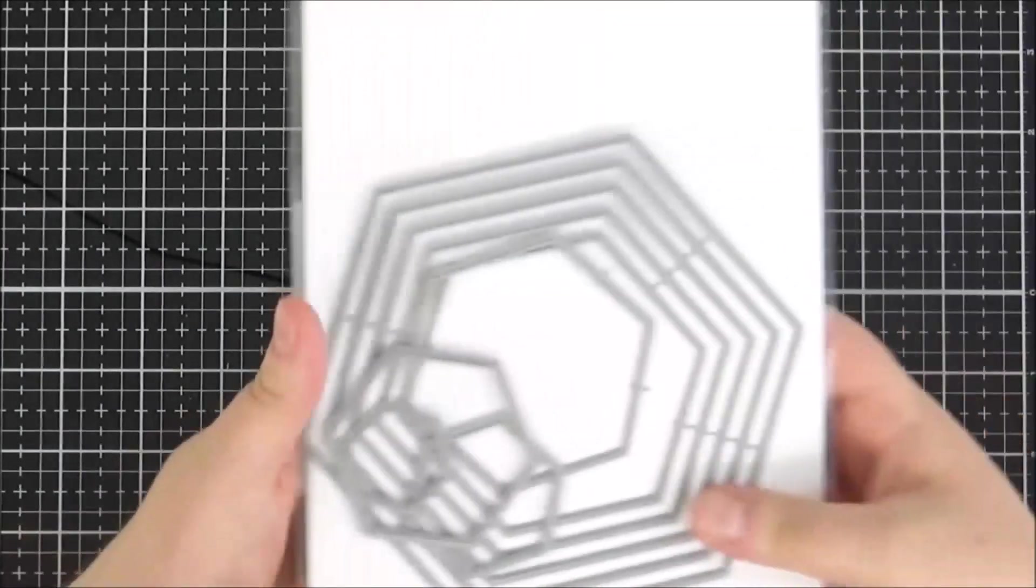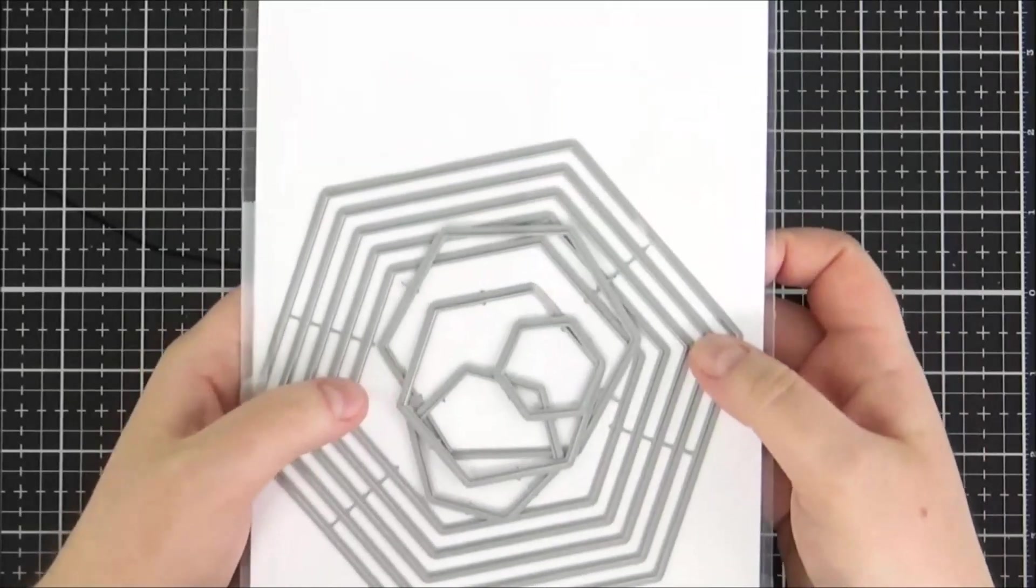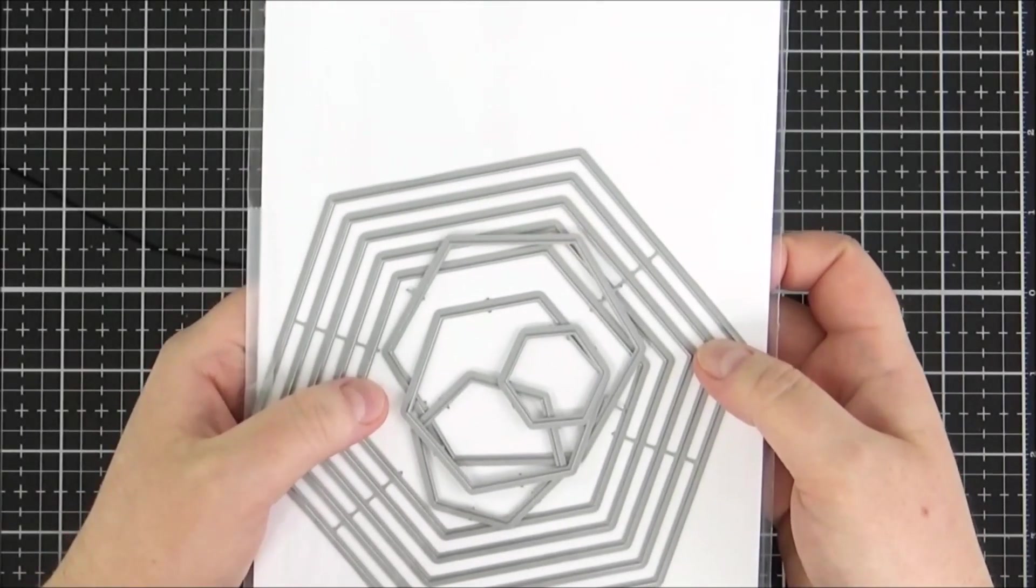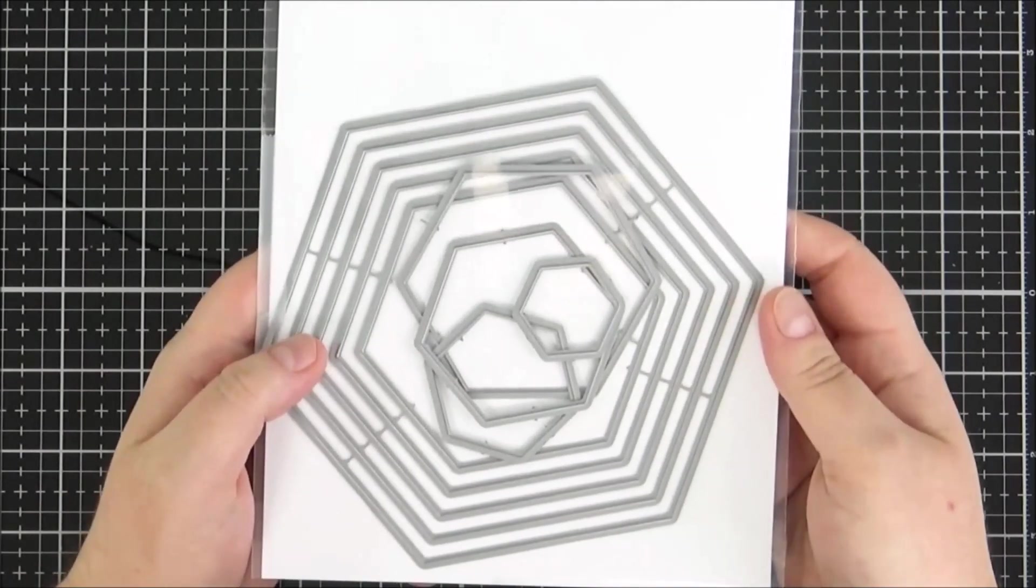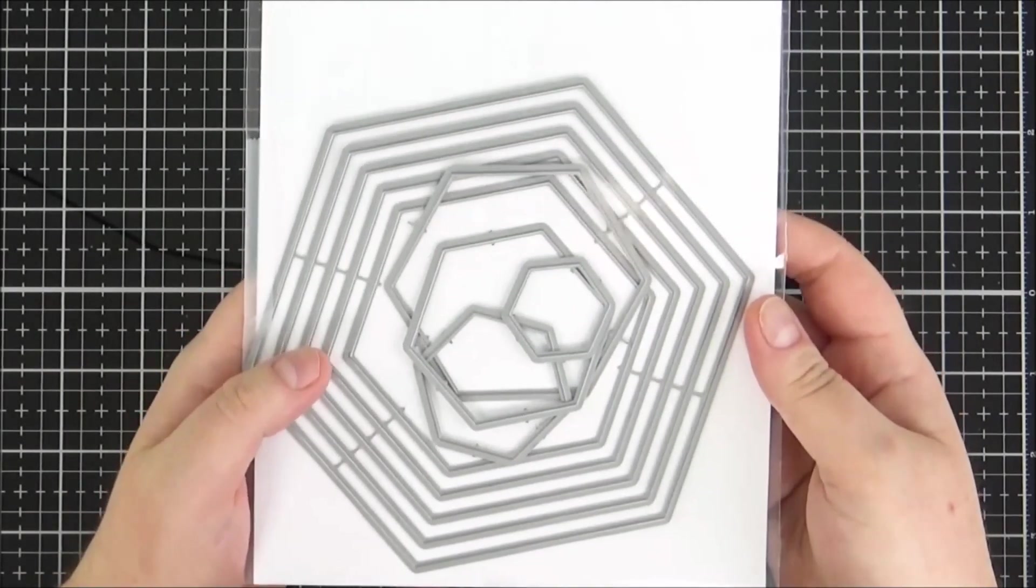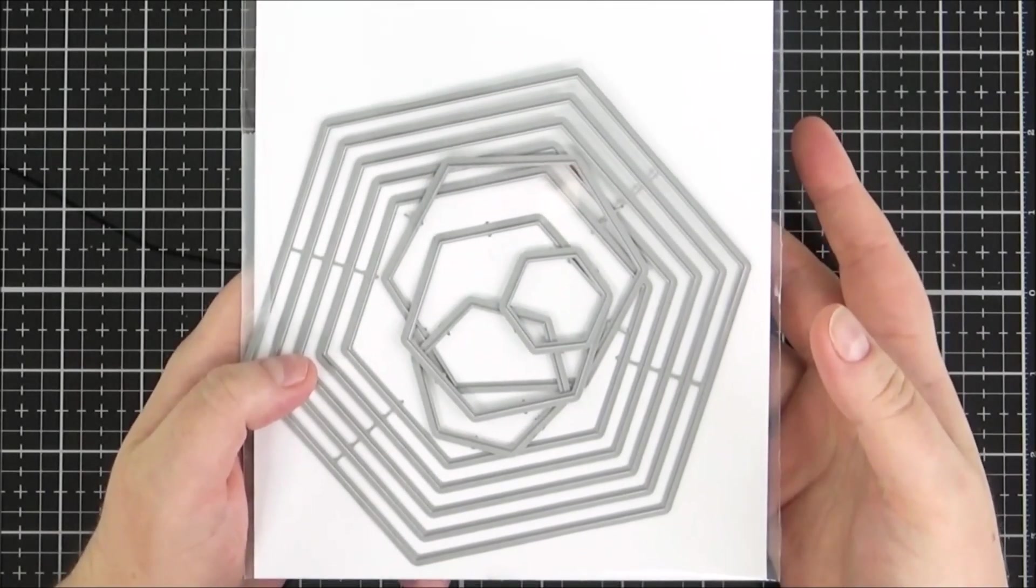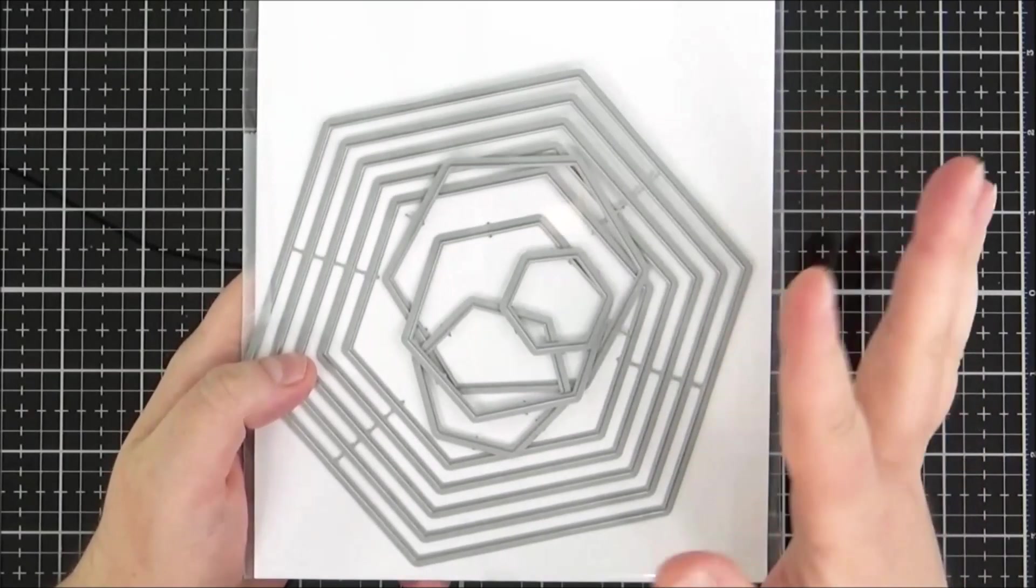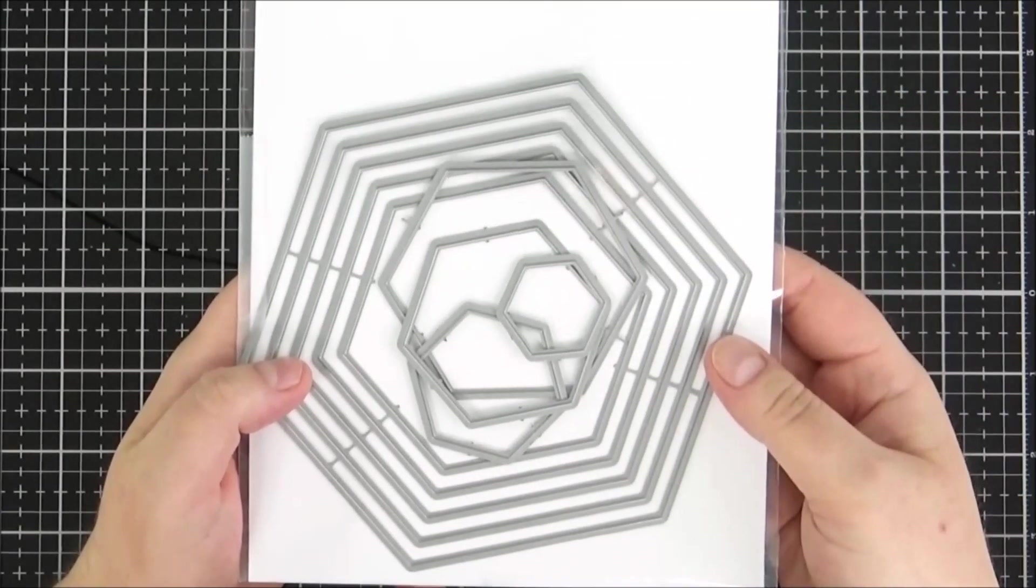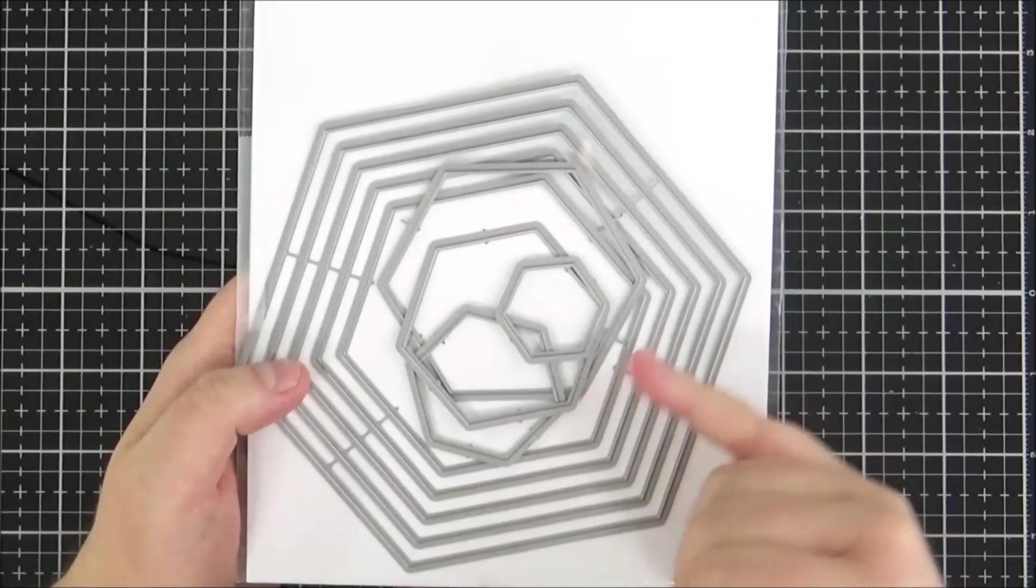And then to go along with that set I thought this would work quite well as well. This is the W Plus Nine. This is their Clear Stackers Hexagon Dies. I picked these up from Seven Hills Crafts. I don't know why but I've put off buying Hexagon Dies for absolutely ages. I have no idea why because I really like them. For some reason I didn't buy them so eventually I decided to pick some up. Obviously as you can see I have cut them apart and used them already. I apologize for that.